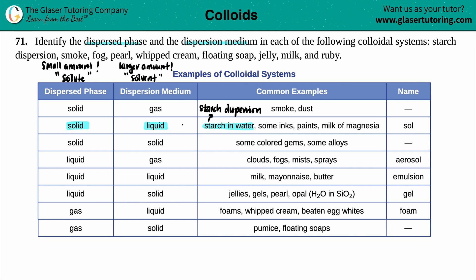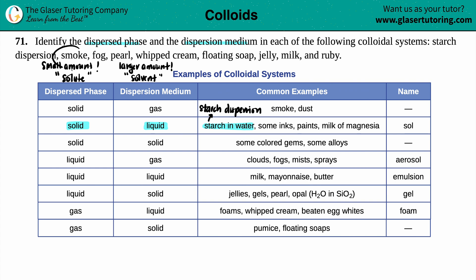That's how we'll work through this question. For starch dispersion: dispersed phase — solid; dispersion medium — liquid. The next one is smoke. Smoke is up here on the chart. The dispersed phase, the small amount, is a solid that is dispersed into the larger amount of gas. In smoke, you see it predominantly as gas, but within that gas there are tiny small amounts of solids.